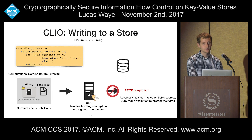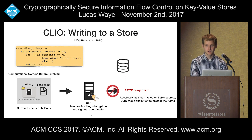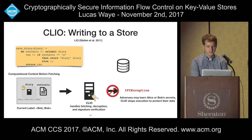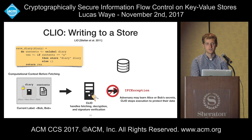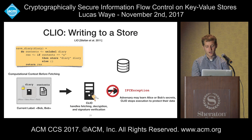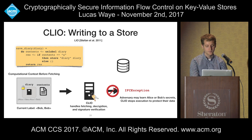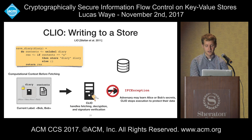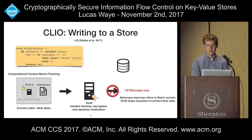One thing to note is that the current label must be public — that is, you shouldn't be affected by any confidential information. This is to prevent possible write side channels where the decision to write a value is based on confidential information. For example, a program that tries to write to the store only when the contents of the diary are the value A would be stopped by Clio, since an adversary could observe whether or not the diary was placed on the store and learn something. So Clio will abort such a program.